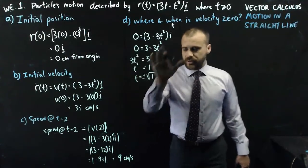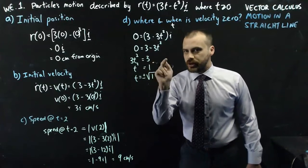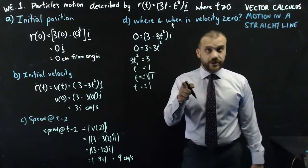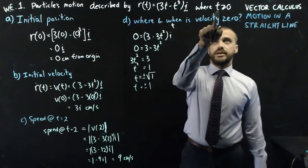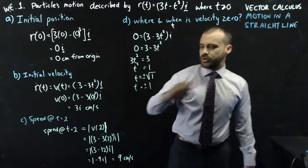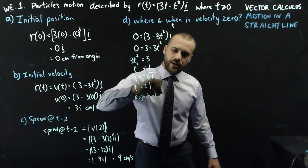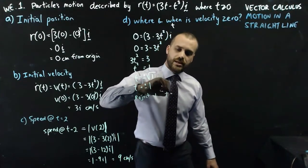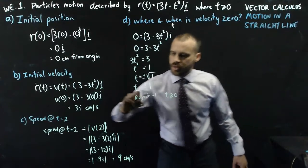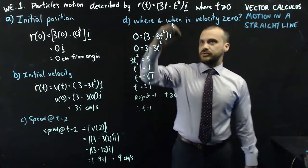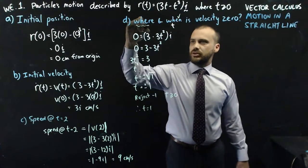Now if you're careful about that, you're going to end up at plus or minus root one, and root one is just one. But then, importantly, you're going to say, wait a minute, the question said where t is greater than or equal to zero. So we can reject negative one because t is greater than or equal to zero. Therefore, t is equal to one. And that solves the when, but it doesn't solve the where.